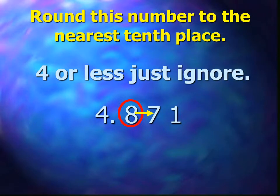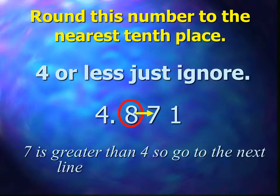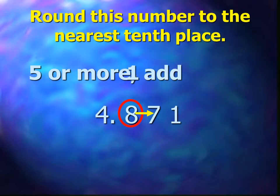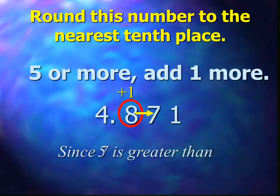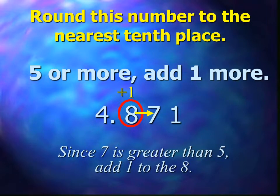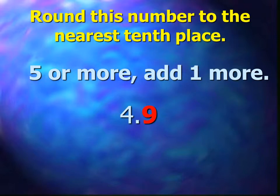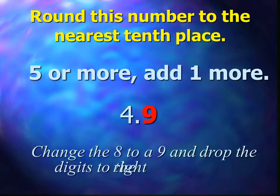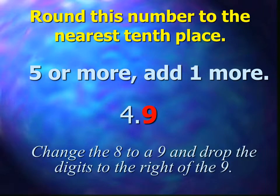Four or less, just ignore. The arrow is pointing to the digit seven, and seven is greater than four, so we need to go to the next line of the poem. Five or more, add one more. Since the seven is greater than five, add one to the eight. Change the eight to a nine, and drop all of the rest of the digits to the right of the nine, as they are not needed anymore.